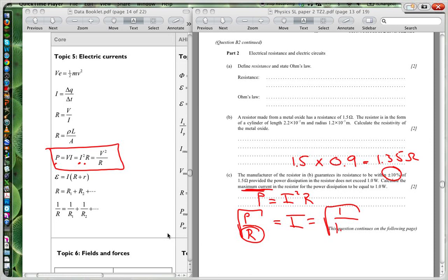And so it's going to be 1 over 1.35. And that gives a value of 0.86 Amps.